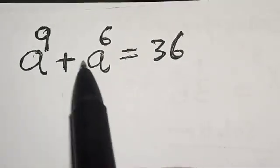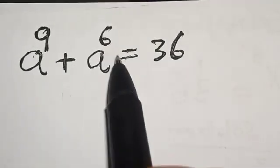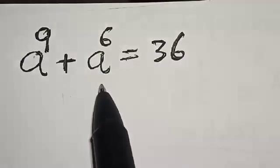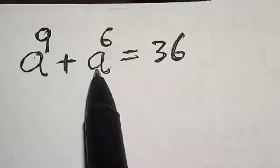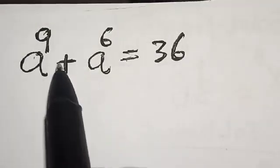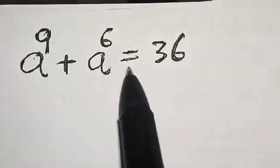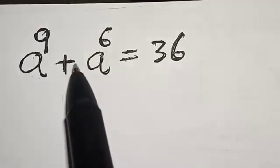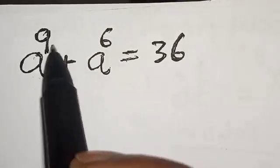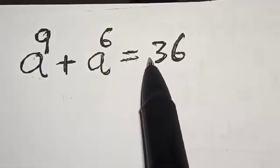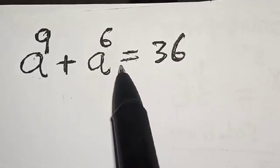A raised to power 9 plus A raised to power 6 is equal to 36. Hi, everyone. Welcome to my class. In this class, we want to find the value of A from this given equation: A raised to power 9 plus A raised to power 6 is equal to 36.